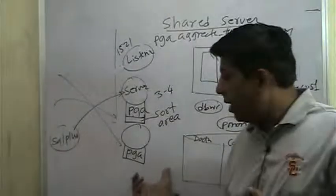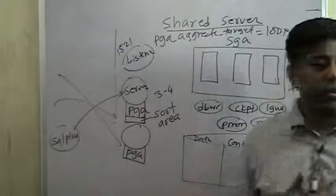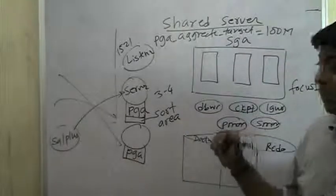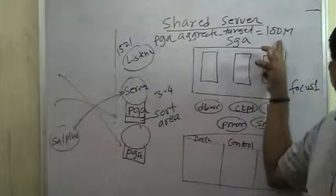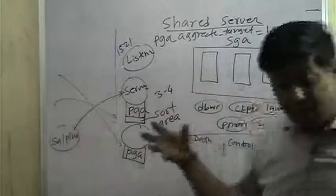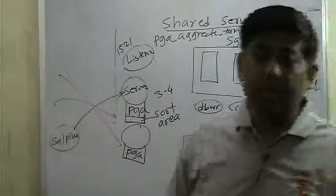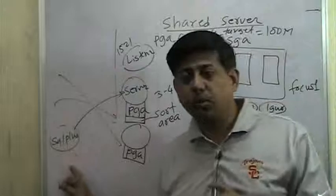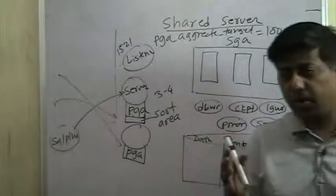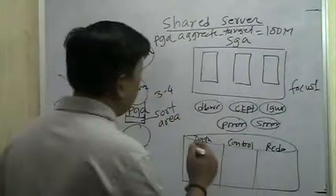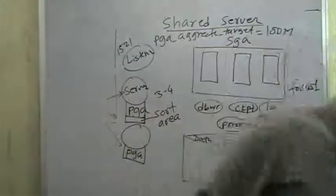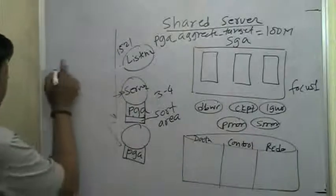Suppose demand has grown and suddenly we want a thousand users connected. Can the PGA of all those thousand users stay within 100 megabytes? If the PGA target is 100 megabytes, they will have to cram into it, and those users will experience slowness in performance because memory is shrunken. We can increase the PGA aggregate target from 100 to 200 to 300 to 400, but finally there is a limitation based on available RAM.